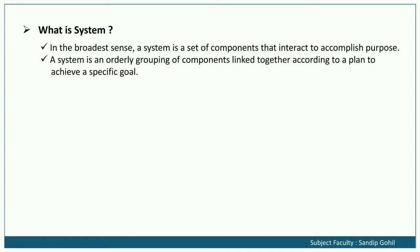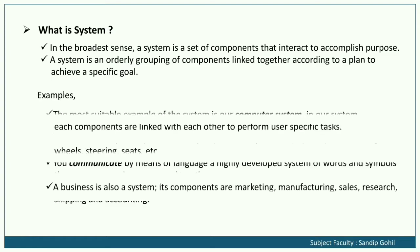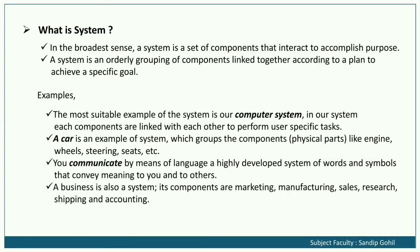It means that a system is a collection of components or parts, and those parts form an organized structure. System components are linked together according to a plan. For example, the most suitable example of a system is a computer system, where each component is linked with each other to perform user-specific tasks. A car is also an example of a system, grouping physical parts like engine, vehicle, steering, seats, etc.